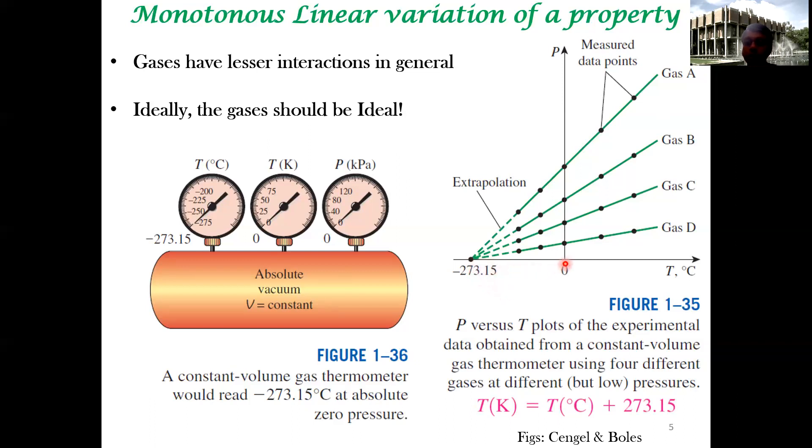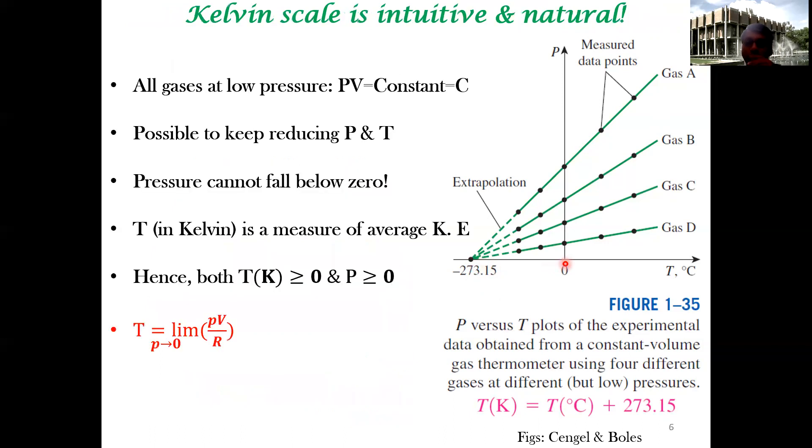Let's see why this happens. All gases irrespective of the composition tend to behave as if they're an ideal gas. As you go asymptotically, as you reach zero Kelvin, all gases follow PV = constant. This is an empirical observation. It is possible to reduce the pressure as you keep cooling that system to a greater extent. You can decrease the pressure to a lesser and lesser value.